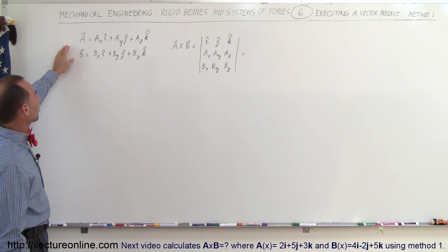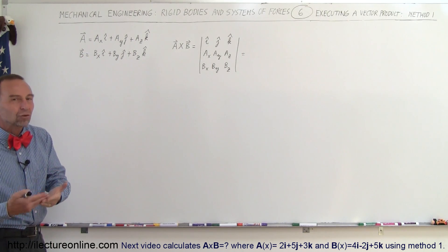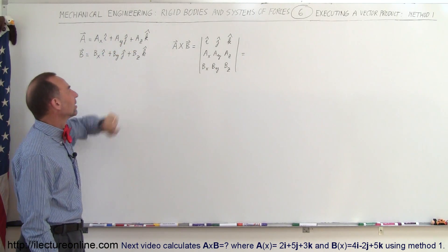So method one, we have two vectors: vector A and vector B. This is typically how you write out the vectors. Each vector will have an X, Y, and Z component, and so we indicate that with the direction i, j, and k.